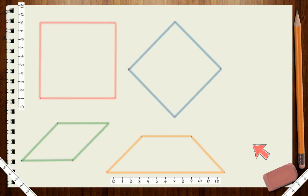Hi, everybody. I need your help with a problem. I drew these shapes and then I shared them with my friends, and one of my friends said that just one of these shapes is a square.